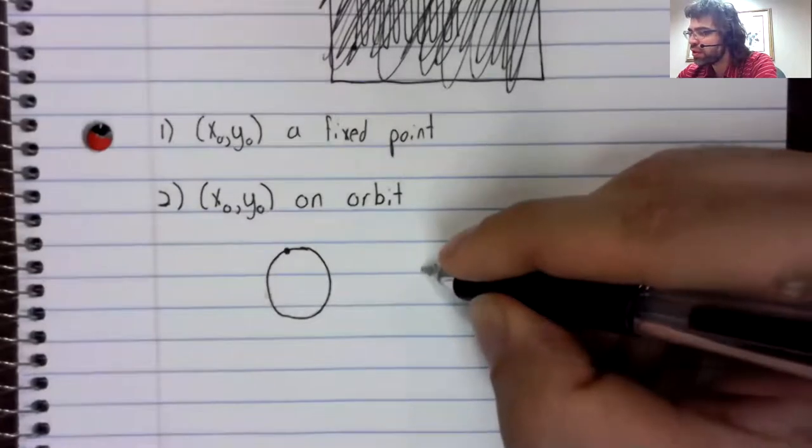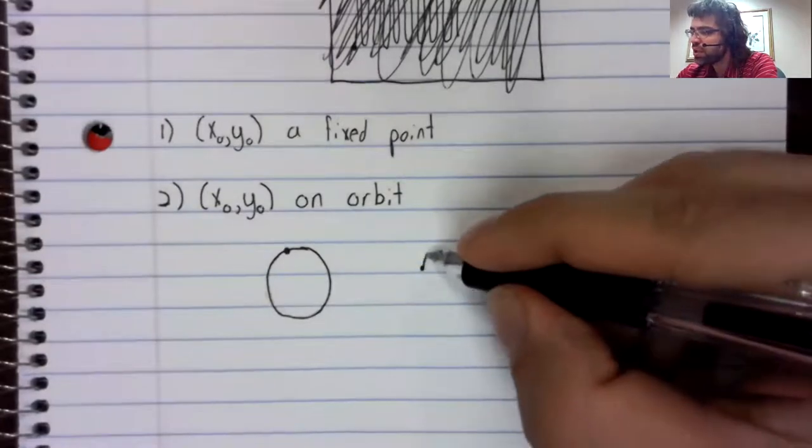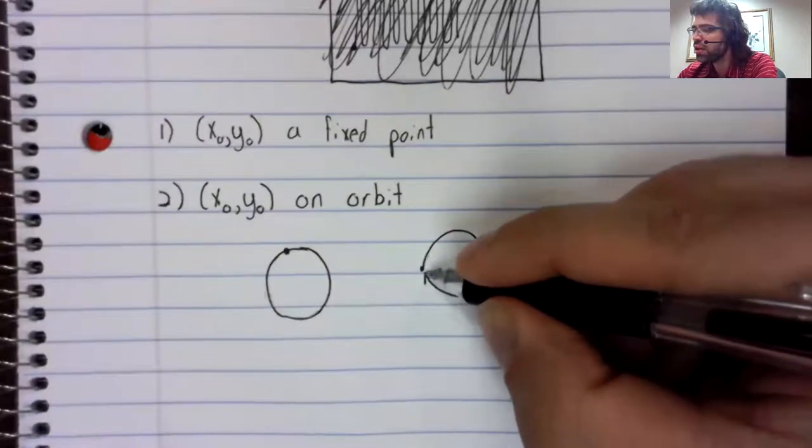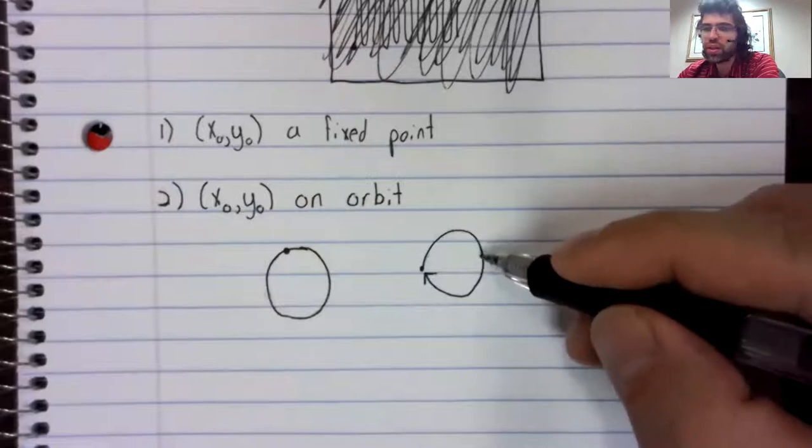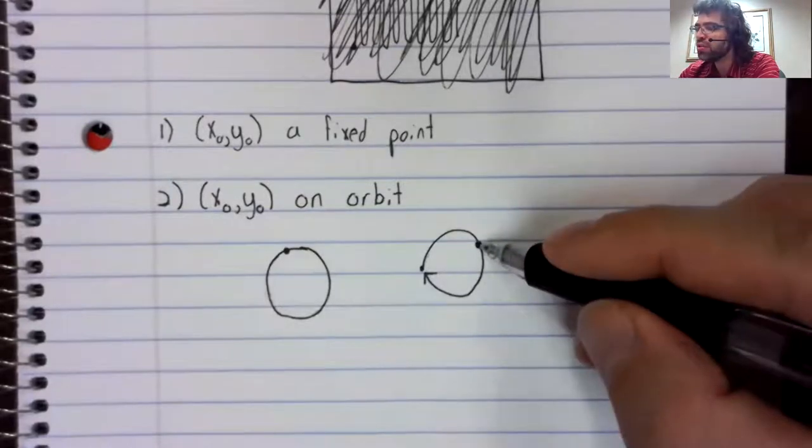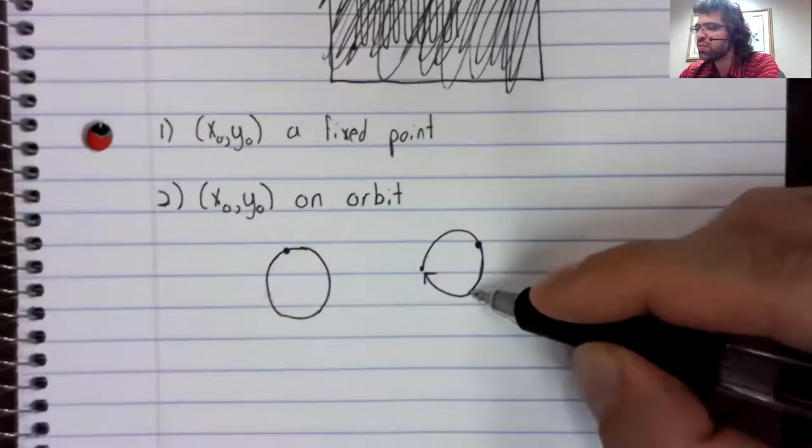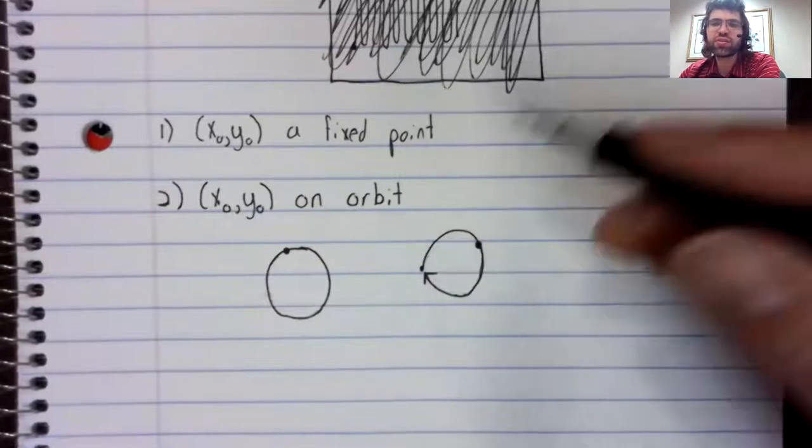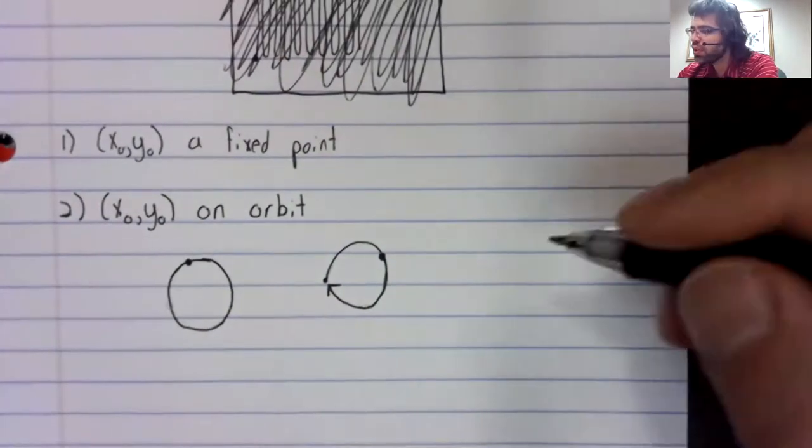However, if instead of a periodic orbit, we have a homoclinic orbit, and we start on this homoclinic orbit, then as time passes, we asymptotically approach a fixed point.